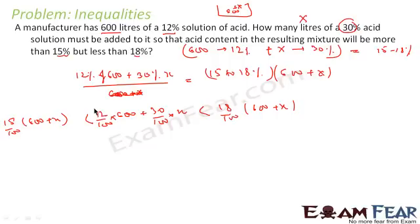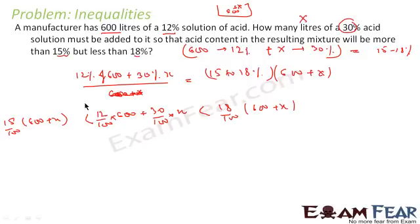Please pay attention here — this is crucial. We are saying 12% of 600 plus 30% of x, when added, should become 15 to 18% of (600 plus x). So we get the solution in this form. Now we have to solve this. We can divide everything by 100.